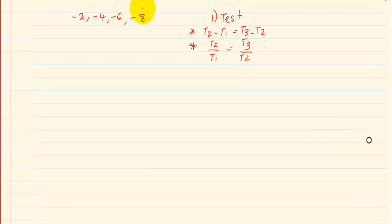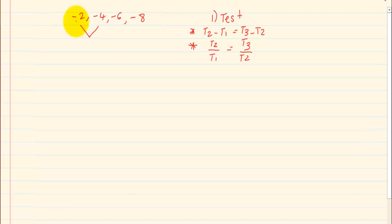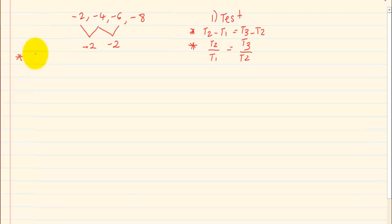If we were using the following number pattern: minus 2, minus 4, minus 6, and minus 8 — how do we do the test? We say minus 4 minus (minus 2), which gives minus 2. Then minus 6 minus (minus 4), which gives minus 2. As long as you do two checks, you can already decide if it is arithmetic or geometric. In this case, we know we are working with arithmetic.